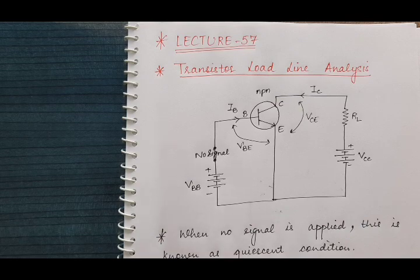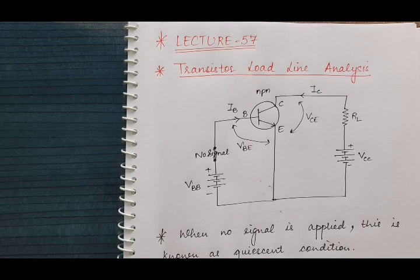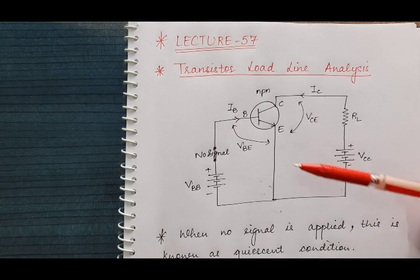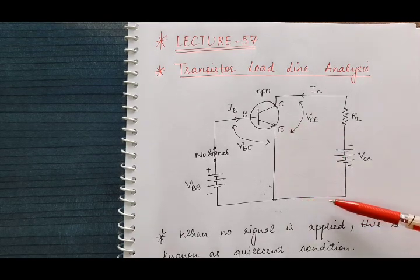Why? Because in case of common emitter transistor amplifier, we have already studied in our previous lectures that current gain is high — overall current gain, voltage gain, power gain — it is high in case of common emitter transistor amplifier than in case of common base transistor amplifier. That is why we are considering common emitter NPN transistor amplifier where emitter terminal is common between the output circuit and the input circuit.